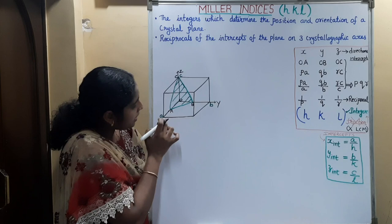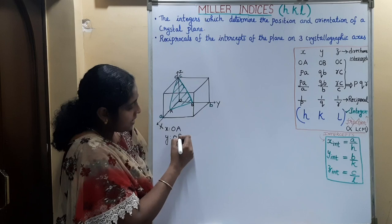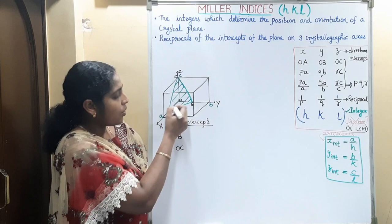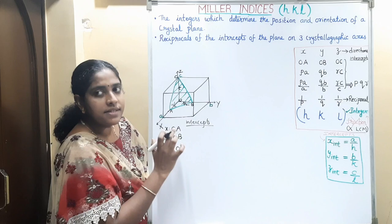This A, B, C lattice plane has an intercept of OA along the x-axis, OB along the y-axis, and the intercept along the z-axis is OC. Let OA equal A/2, OB equal B/2, and OC equal C. Now we can write the intercepts along the x, y, z axes: OA is A/2, OB is B/2, OC is C.